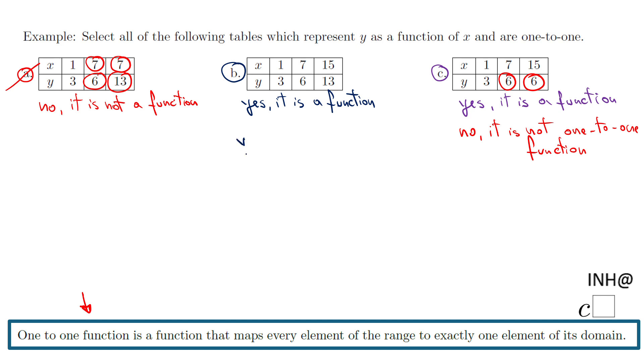Because yes, every element in the range—three, six, and thirteen in this case—is a map of exactly one element into its domain. Yes, it is one-to-one.